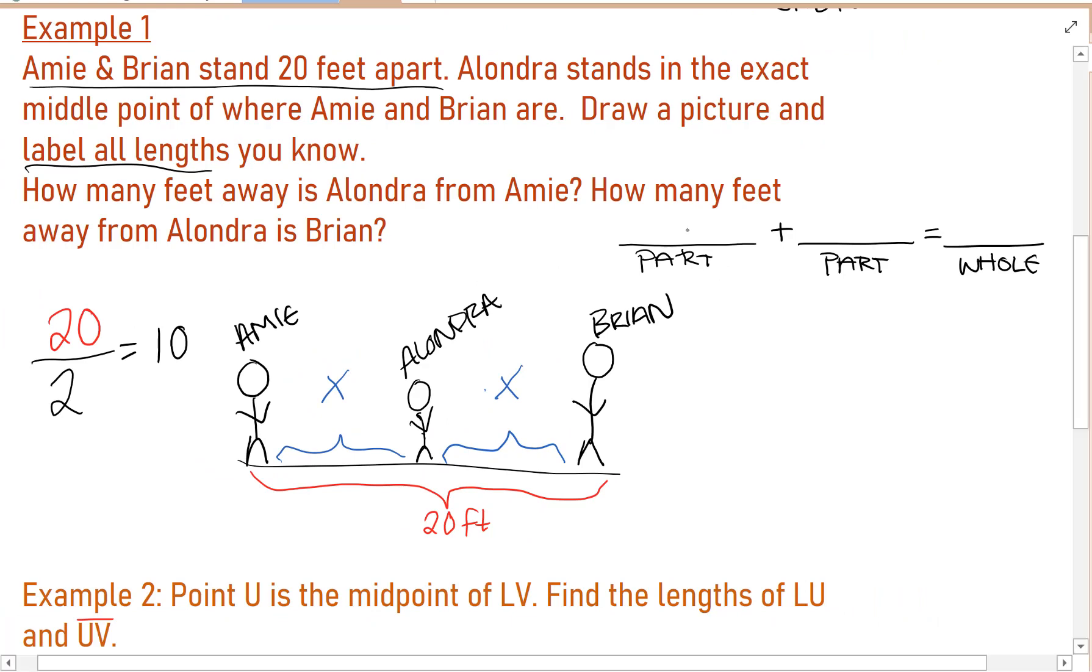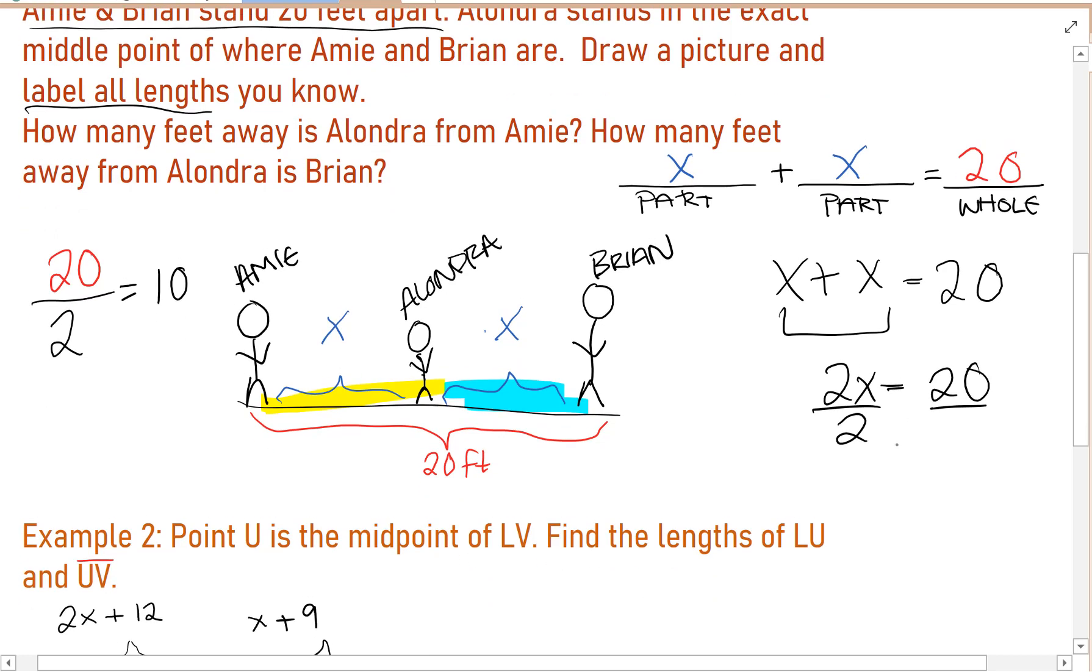One of the parts is X. The other part is also X. And the distance between the ends is 20. And in order to solve that, X plus X equals 20, I would combine like terms and get 2X equals 20. Divide both sides by two to get X with a coefficient of one. X equals 10. And our units were in feet. So we were correct that the distance between Amy and Alondra is 10 feet as is the distance between Alondra and Brian.